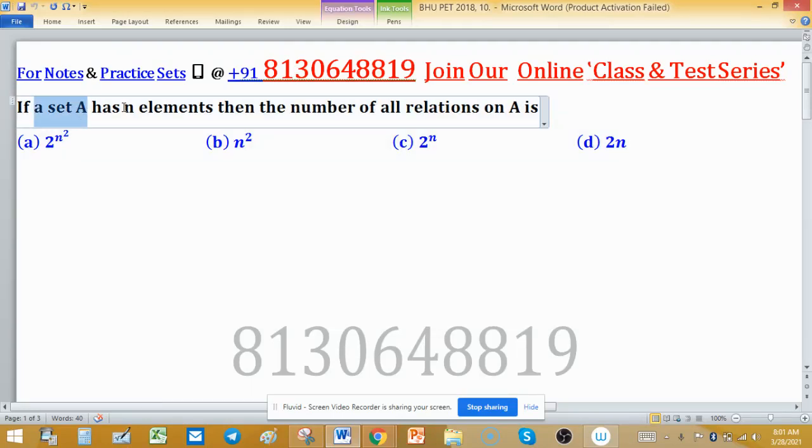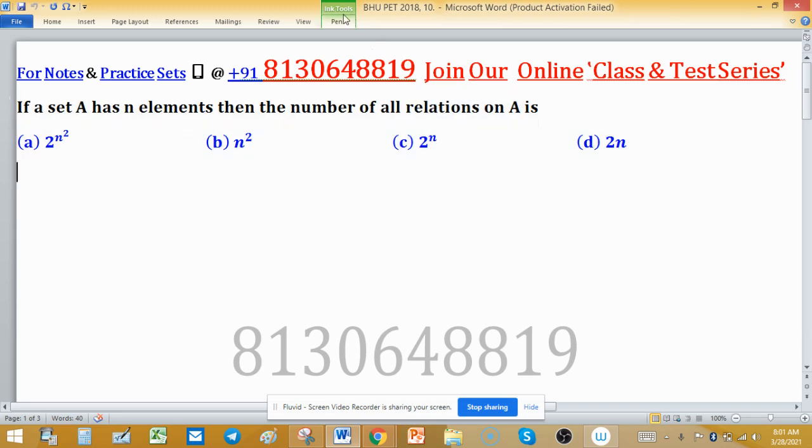If a set A has N elements, then the number of all relations on A is. We have to find number of relations on A.